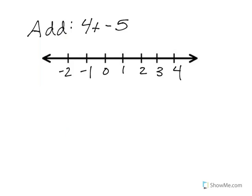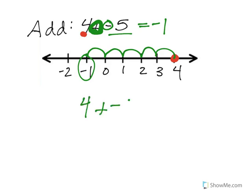Now we're going to add 4 plus negative 5. Again, starting at 4. So here's 4. And then we're adding negative 5. And it's a minus, so we're going to move left. 1, 2, 3, 4, 5. And we're at negative 1. So 4 plus negative 5 equals negative 1.